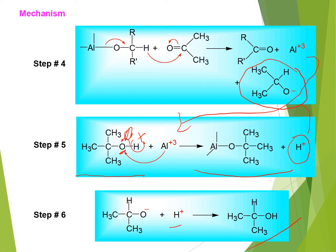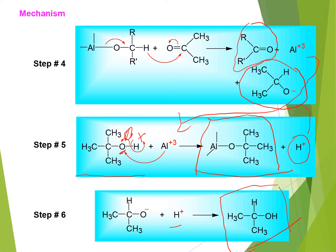We can see that aluminum tertiary butoxide is again formed in step five. We use aluminum tertiary butoxide as a catalyst. We know that a catalyst always initiates the reaction and helps to process the reaction, but at the end of the reaction it remains unchanged. So after completion of the reaction, the secondary alcohol is converted to its corresponding ketone, and another alcohol is produced from the acetone used in this reaction.